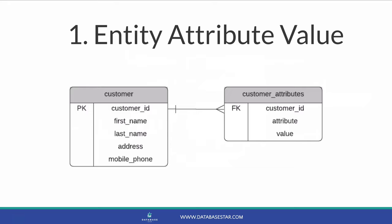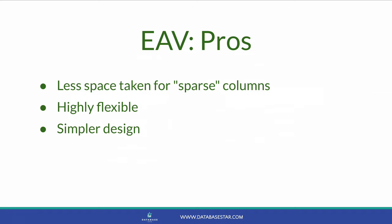Is the EAV design a good design? The short answer is no — it should be avoided in almost all situations. So why would you use it, and why should it be avoided if it looks pretty simple? One advantage is that it takes up less space for sparse columns, which are attributes that only apply to a small number of rows. If you have 1,000 customers and only a few have a business phone number field, you don't need a new column just for a couple of values. Another advantage is flexibility — users can add whatever column and data they want without having to change the database schema; they can just insert a row. It's also easy for developers to implement.